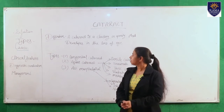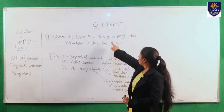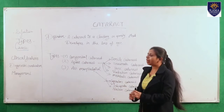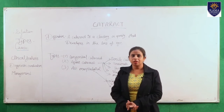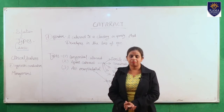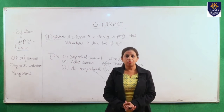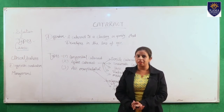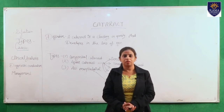In definition, a cataract is a clouding or opacity that develops in the lens of the eye. Any opacity or clouding that occurs in the lens — generally the nature of the lens is clear, but in this condition, opacification occurs in the lens.